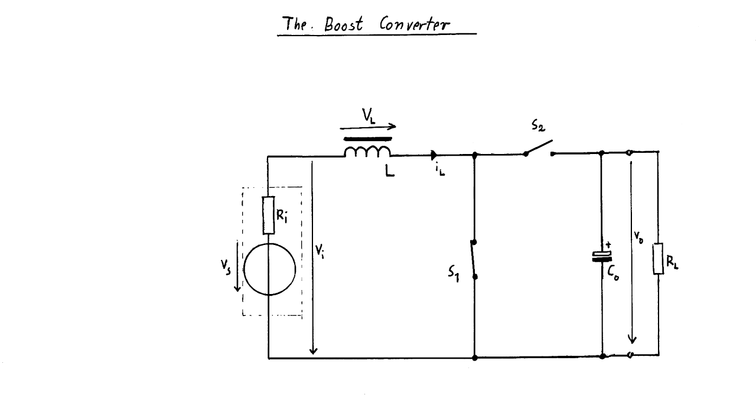To allow many thousands of switching operations per second, the switch S1 is replaced by a power transistor, nowadays usually a power MOSFET like you see here. The second switch can also be a transistor, but in most cases it is realized by a fast switching diode of some kind.